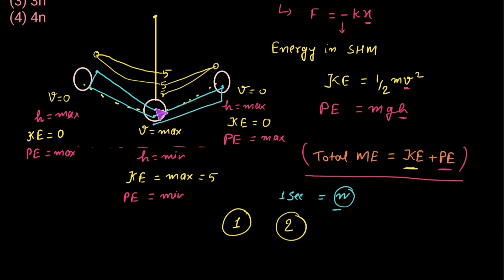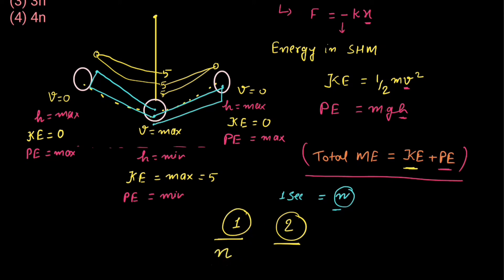One cycle of motion starts from mean position, reaches one extreme, comes back to mean, goes to the other extreme, and returns to mean. During this one cycle of motion, two cycles of kinetic energy take place: one cycle is 5 to 0 and 0 to 5, and another cycle is again 5 to 0 and 0 to 5. So if the frequency of this motion is n, the frequency of kinetic energy would be 2n.